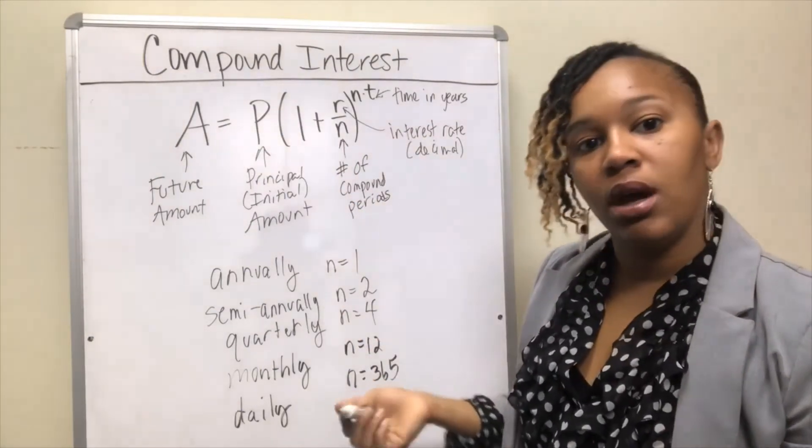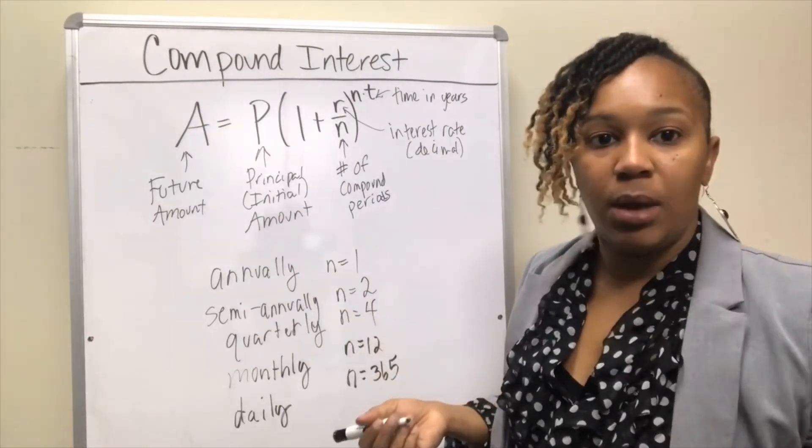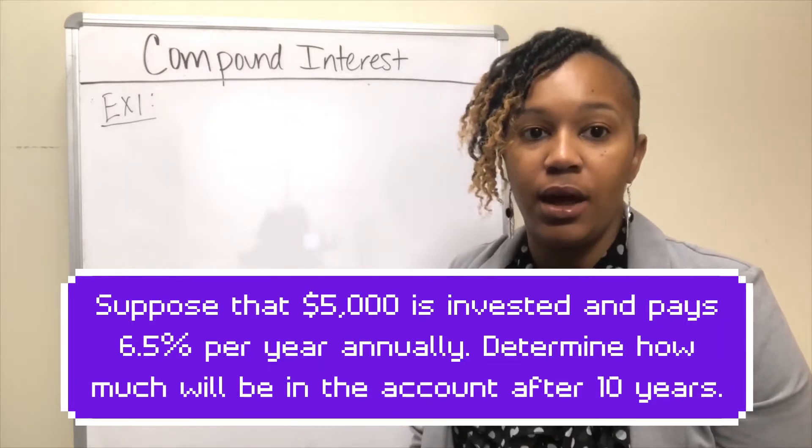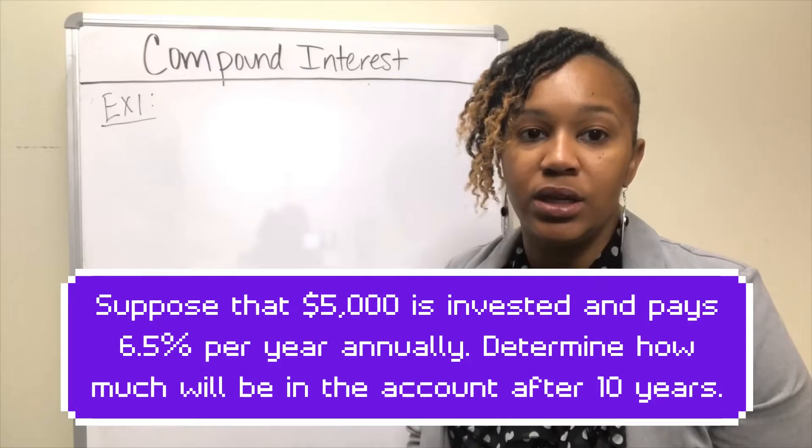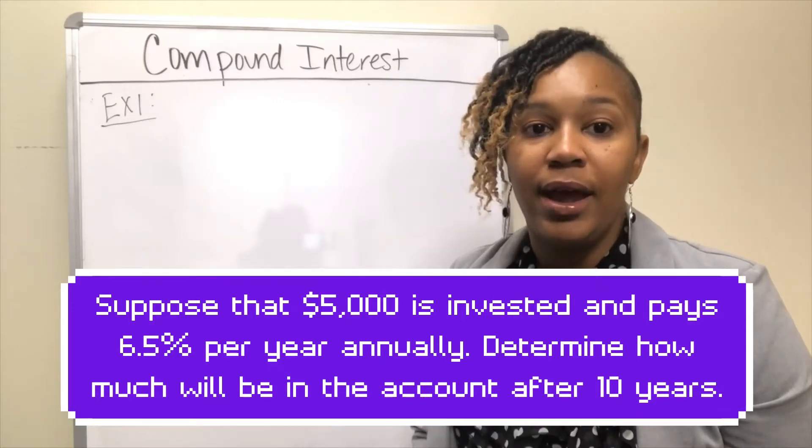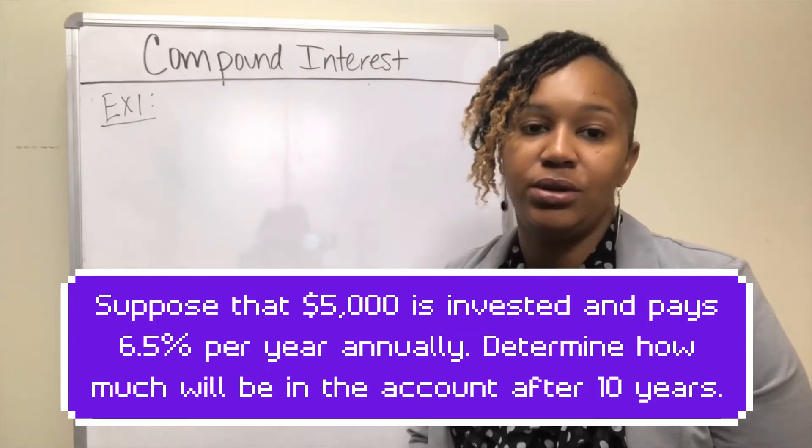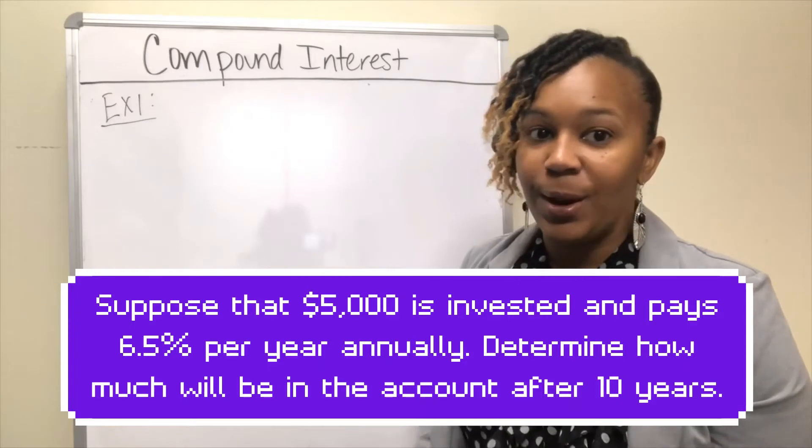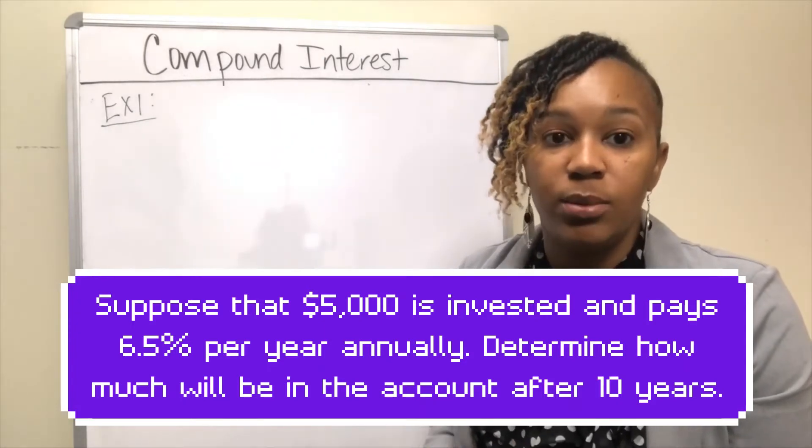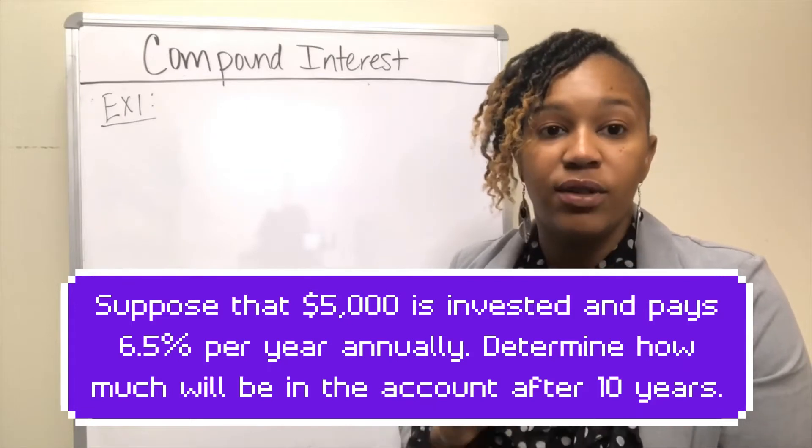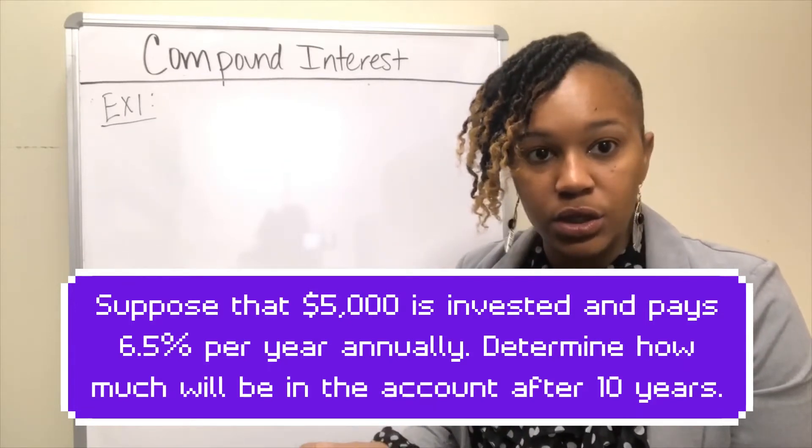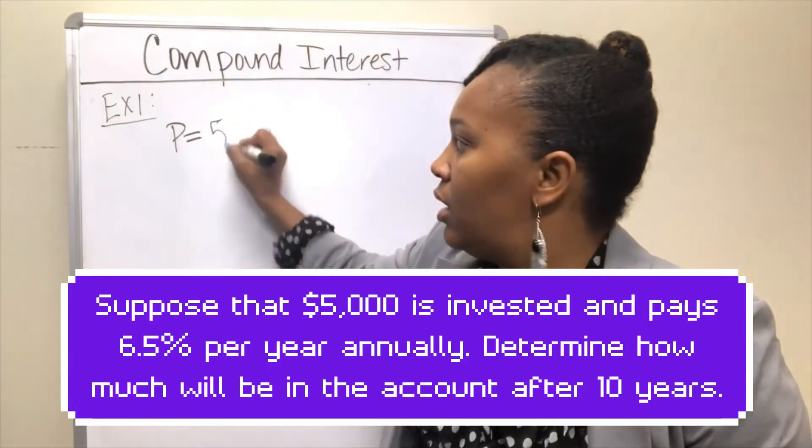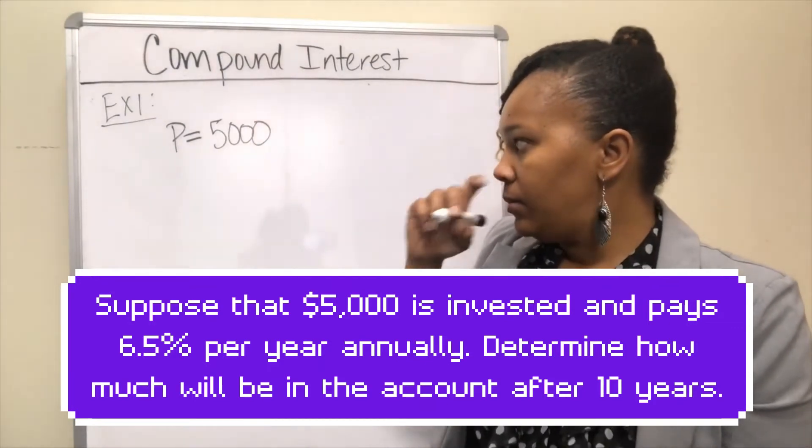This is the formula you want to use when you want to calculate compound interest. Let's work some examples. For example one, suppose that $5,000 is invested into an account that pays 6.5% interest annually. We want to calculate how much money will be in the account after 10 years, considering that the institution compounds interest annually. We're actually looking for the future amount because we want to know how much will be in the account after 10 years. P is the amount that is initially invested, which in this case is $5,000.